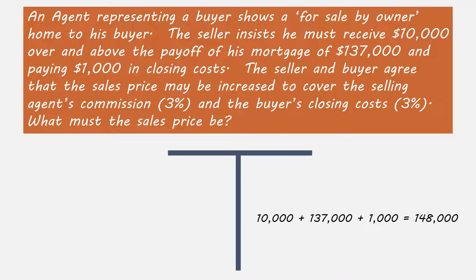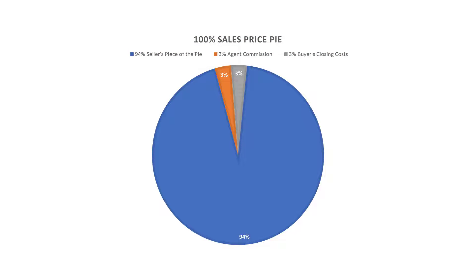Now the rate. The $148,000 that the seller needs to net at closing represents 94% of the overall sales price. How do we determine that? We think of the entire transaction as a pie. The pie represents the total sales price — 100% of the seller's needs. 100% of the sales price minus 3% commission and 3% buyer's closing cost will leave the seller with 94% of the final sales price. That's the seller's piece of the pie.